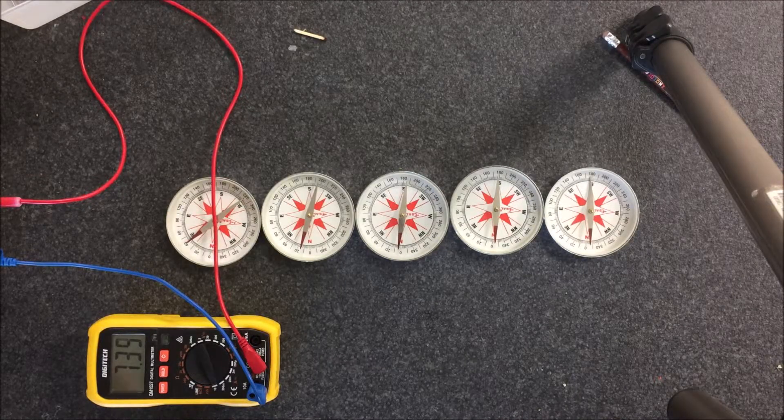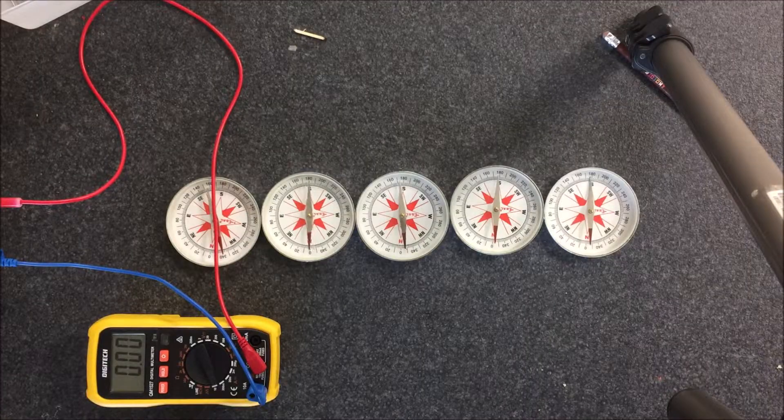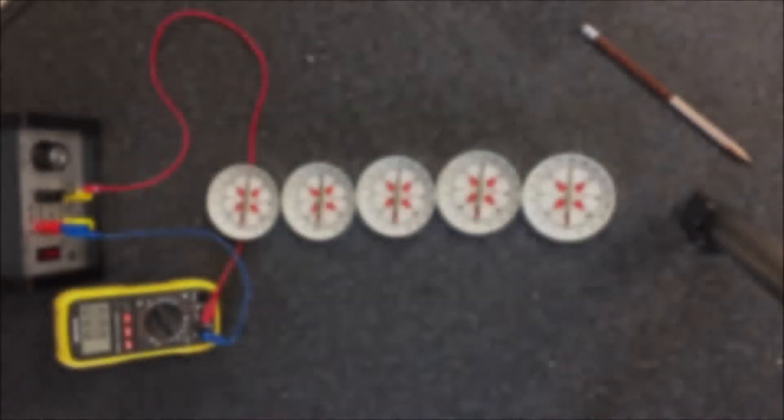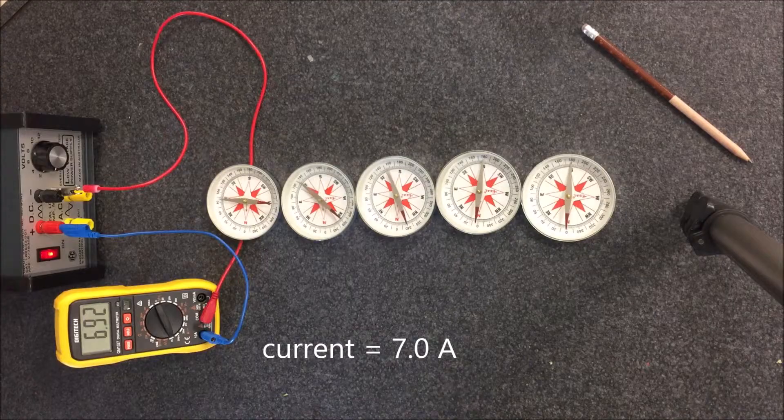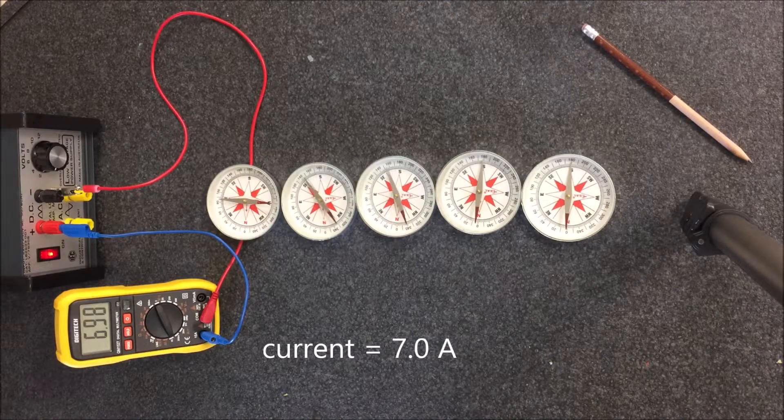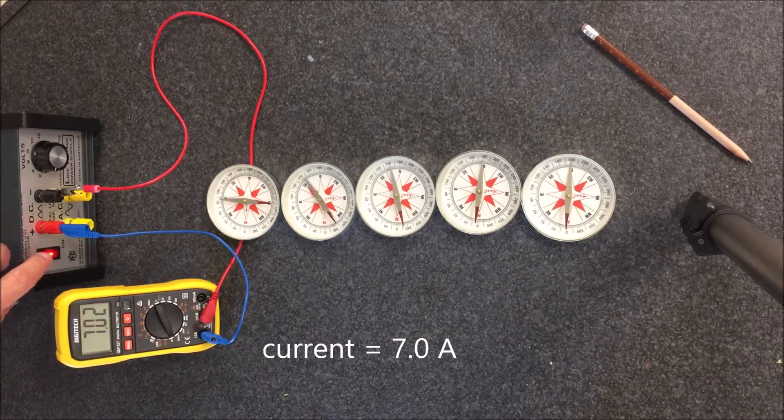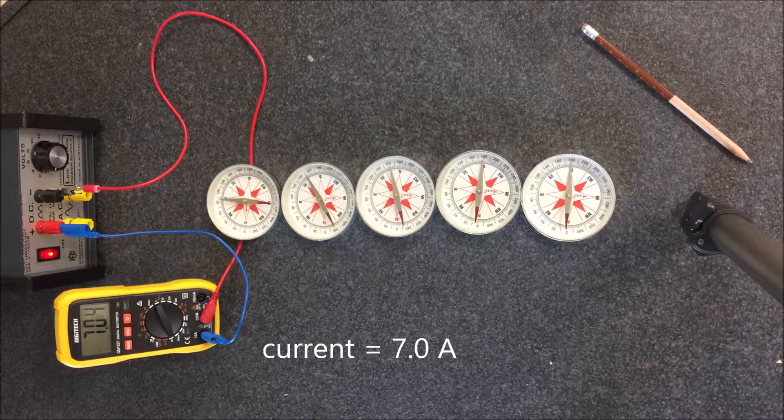Now, I can then put the wire underneath the first compass and get a deflection in the opposite direction. And here we go. We turn it on, and it's reading about 6.9 to 7 amps, and the deflections are in the opposite direction.